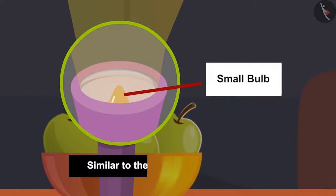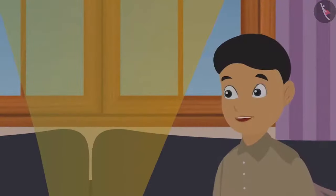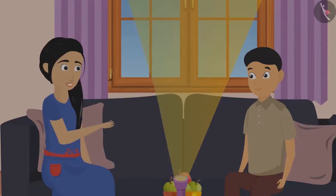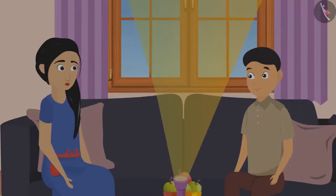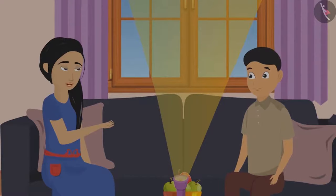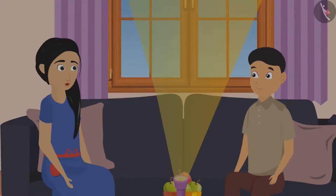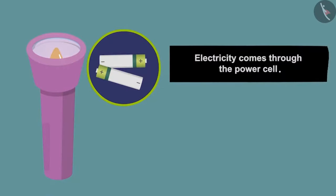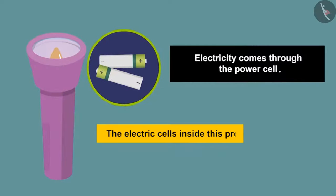'But a big bulb runs on electricity.' 'Rightly said, Sohan. Electricity in that bulb passes through wires. These wires are inside the ground or walls. In this torch, electricity comes through the power cell. The electric cell inside this produces electricity.'